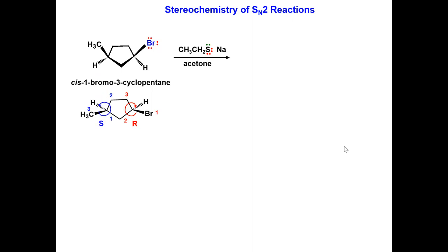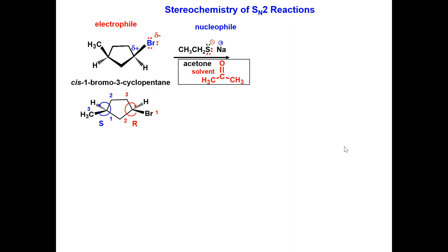Place charges on the molecules and identify the electrophile and nucleophile. Acetone is the solvent. The negatively charged nucleophile attacks the delta positively charged carbon on the electrophile.